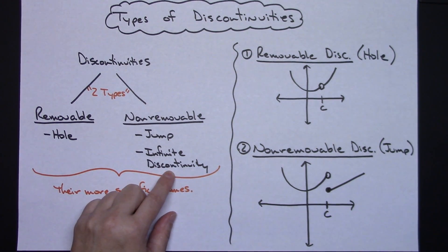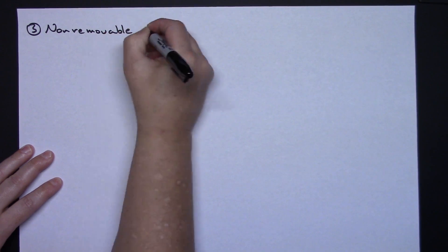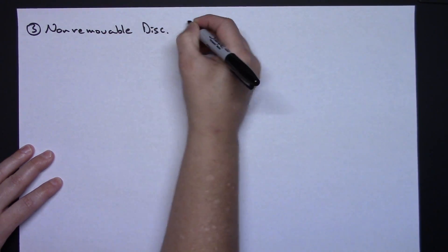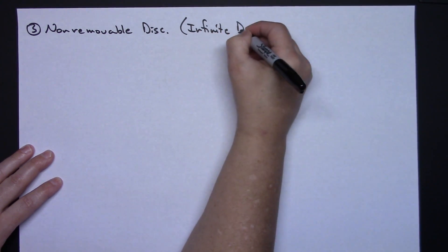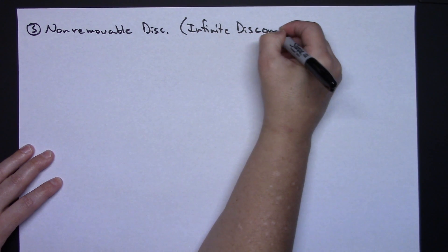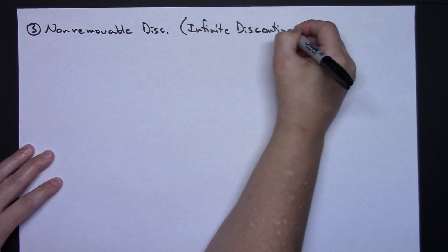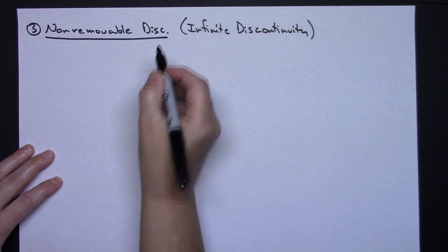Now, for this infinite discontinuity, there's more cases, there's more scenarios to look at. So let's take a look at that third option here. So this third one is definitely a non-removable discontinuity, but it's the infinite discontinuity.